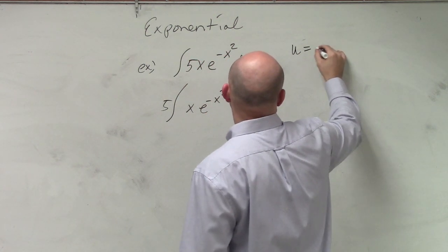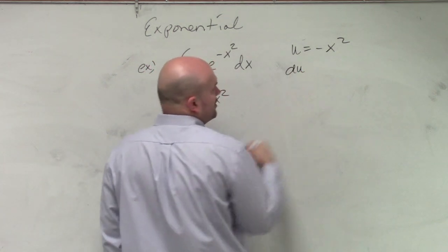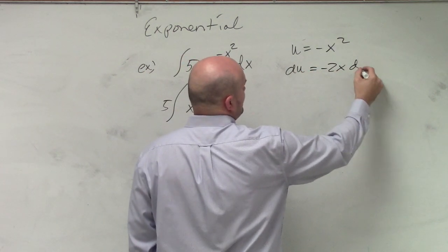When we go ahead and find our u, that's going to be negative x squared. So when I do du/dx, I can solve for du, which is going to equal negative 2x dx.